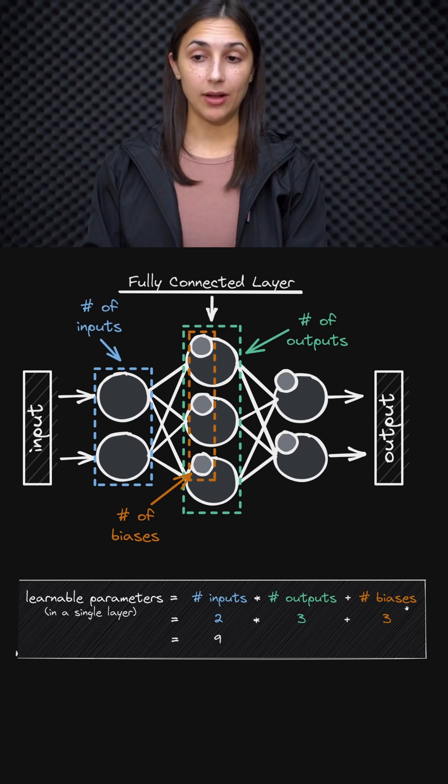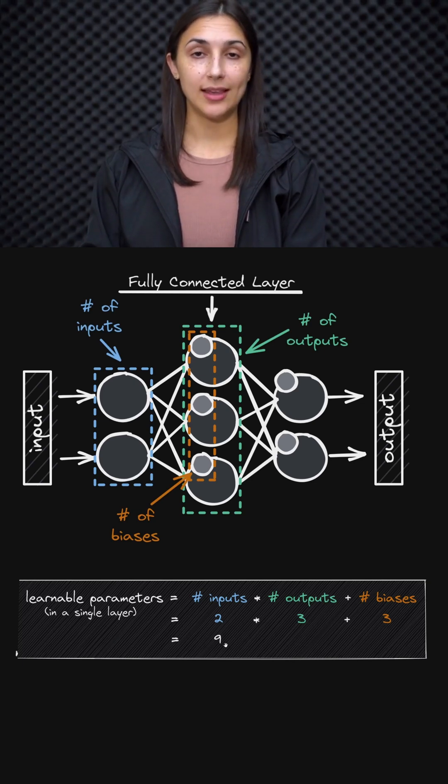Then we simply add the number of biases in this layer, which in our case is three, since we have three bias nodes equivalent to the three output nodes in our layer. So we have two times three, which is six, plus three, which gives us nine total learnable parameters within this single hidden layer.